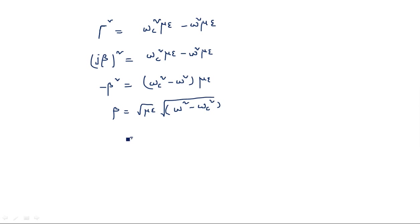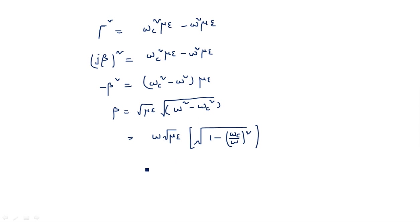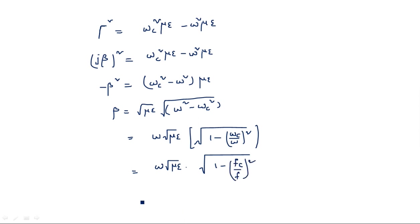We can rewrite β by factoring out ω: β = ω√(με) · √(1 - (ωc/ω)²). Since ωc = 2πfc and ω = 2πf, this becomes β = ω√(με) · √(1 - (fc/f)²).